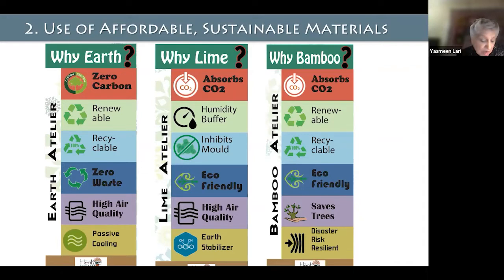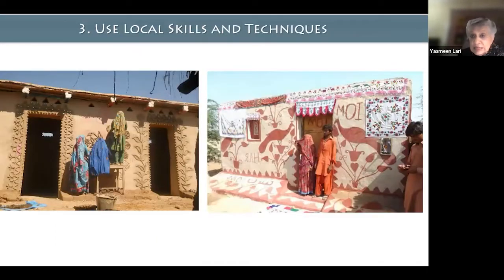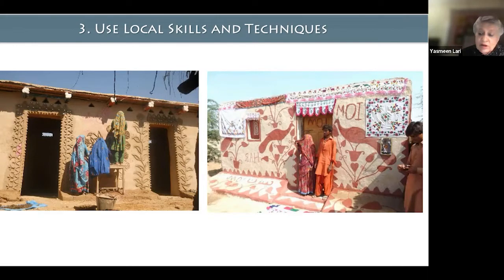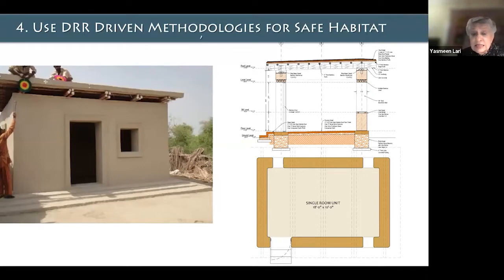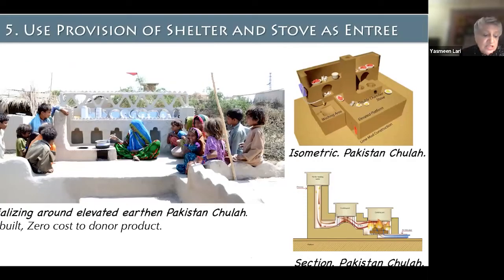Affordable sustainable materials are vitally important — they are virtually zero carbon footprint, which brings costs down. Local skills and techniques should be maximized: these women have worked with earth all their lives, knowing how to shape it, design it, make patterns — you can see how beautifully they decorate their own houses. DRR-driven methodologies include safe structures using sun-dried brick walls with lime and mud plaster, and a bamboo roof, which is very safe in floods — you can climb on the roof for refuge.